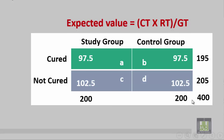Similarly, the expected value for B is calculated by multiplying its column total by its row total divided by its grand total: 200 times 195 divided by 400. For C, we multiply 200 by 205 divided by 400, giving 102.5. And for D, we multiply 200 by 205 divided by 400.